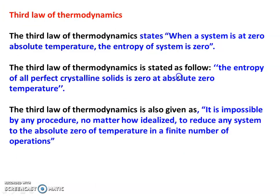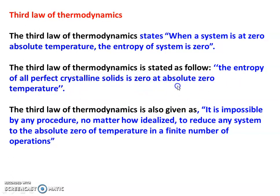Third Law of Thermodynamics — there are three statements. First statement: when a system is at zero absolute temperature (zero Kelvin), the entropy of the system is zero. Second statement: the entropy of all perfect crystalline solids is zero at absolute zero temperature. Zero Kelvin is equal to minus 273 degrees Celsius, which is very difficult — in fact impossible — to achieve.